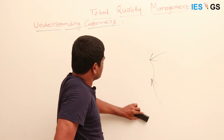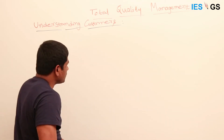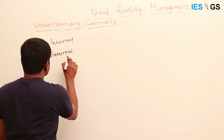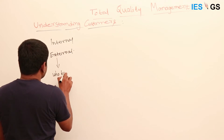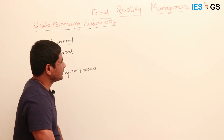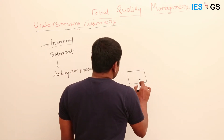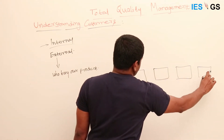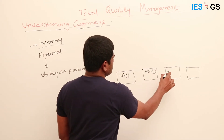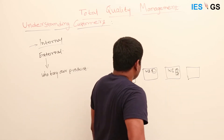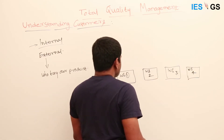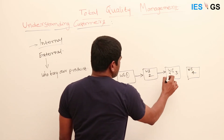Generally, customers are divided into two types: internal customers and external customers. External customers are those who buy our final product. As for internal customers, consider a car manufacturing company with workstation one, workstation two, workstation three, and workstation four. All these processes are arranged in a sequence.